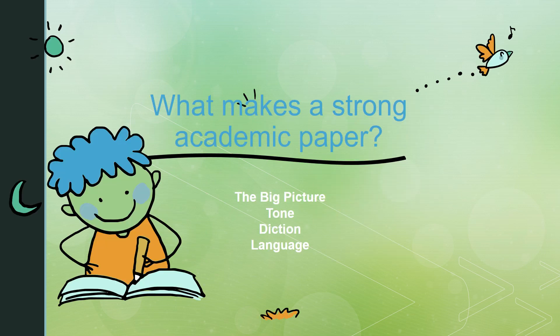The big picture: the overall structure of academic writing is formal and logical. Tone: describe the arguments accurately and without loaded or biased language.